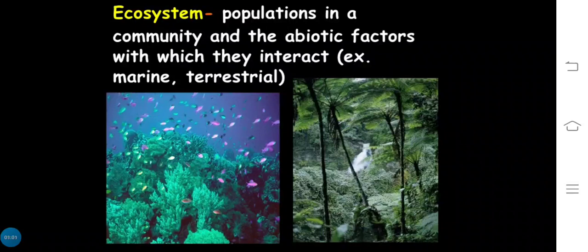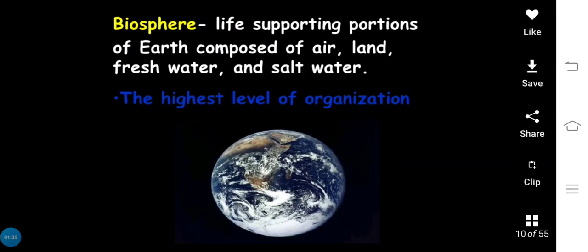An ecosystem involves the interaction of biotic and abiotic factors. It includes population, community, and abiotic factors that interact together. Examples include marine ecosystems and others. I hope you are clear with the ecosystem concept.